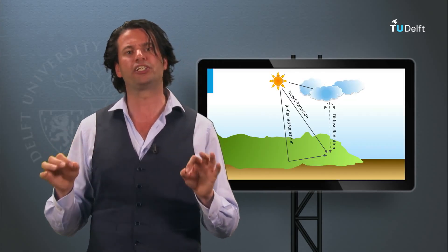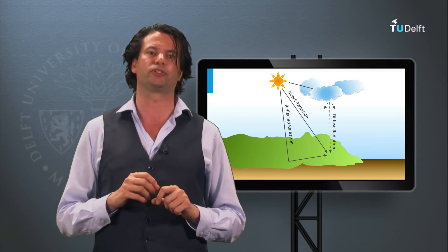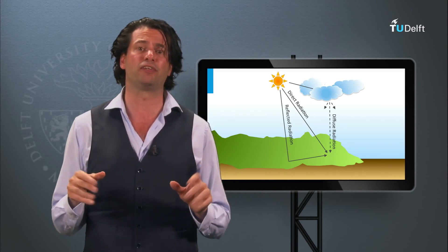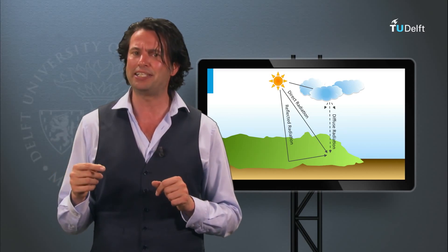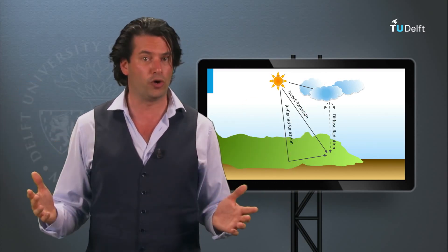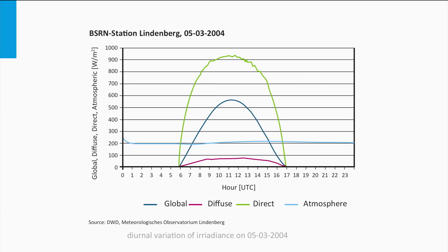Up to now we have only considered light coming directly from the sun incident on the Earth's surface. However, 26% of the light is scattered in the atmosphere, meaning light falls on surfaces from various angles. The amount of solar radiation that falls on a horizontal surface is characterized by global horizontal irradiance. It is the energy coming from all directions, consisting of direct normal radiation from the sun and diffuse radiation from the sky. In weeks 7 and 8 we will discuss PV systems, where the response differs between diffuse and direct light.